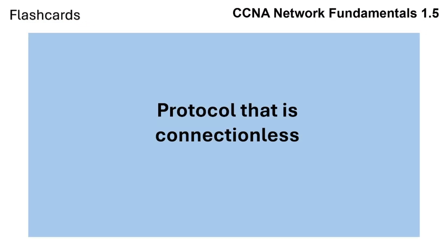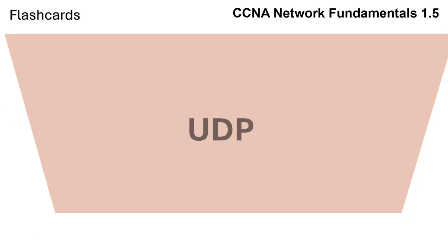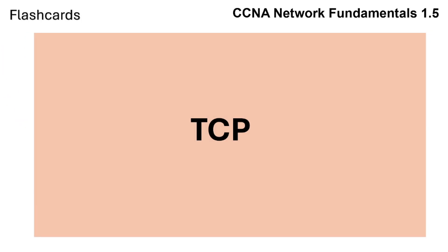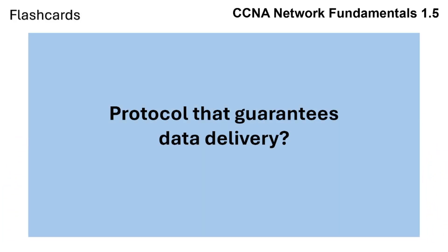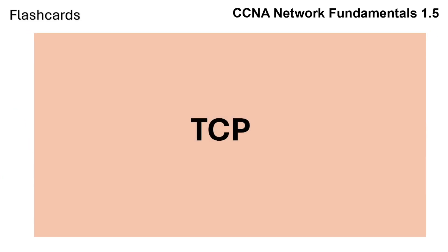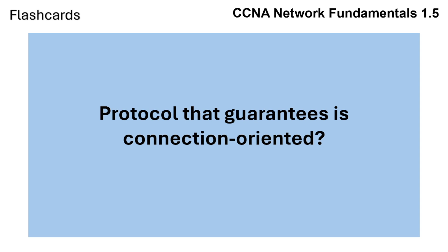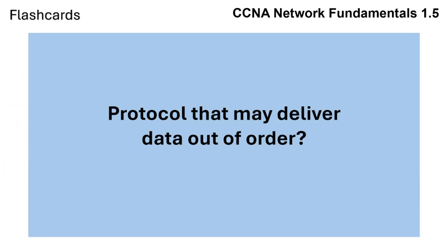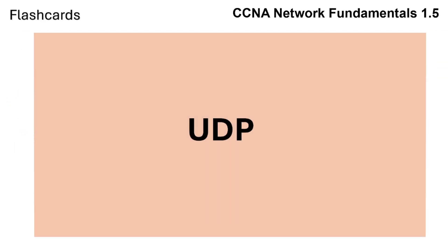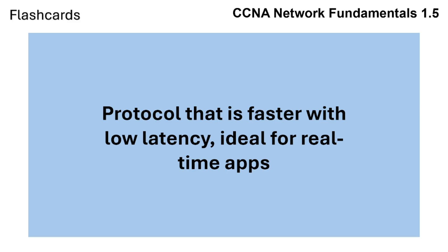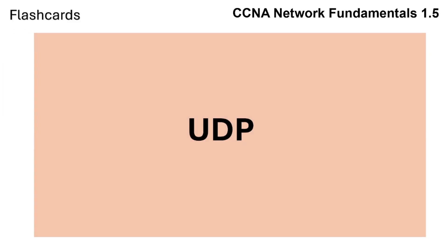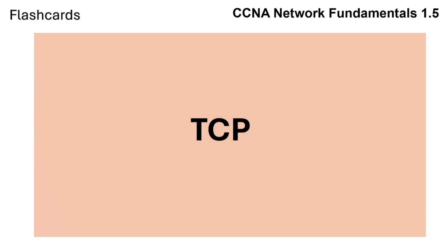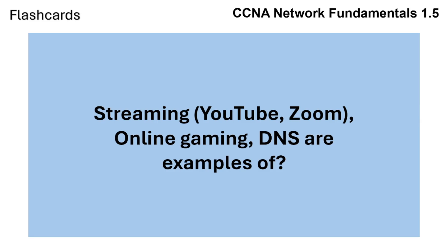Quick review: A connectionless protocol is UDP. Web browsing, email, and file transfers are examples of protocols that guarantee data delivery — that's TCP. A connection-oriented protocol is TCP. A protocol that may deliver data out of order is UDP. The protocol that is faster with low latency and ideal for real-time apps is UDP. The protocol with more overhead but more reliability is TCP. Streaming, online gaming, and DNS are examples of UDP applications.